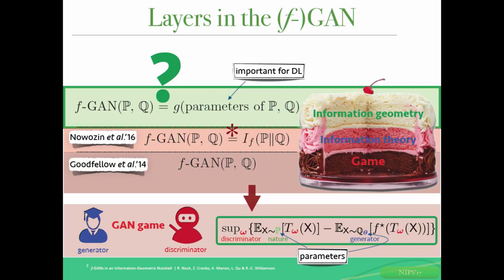Nowozin et al. put an information-theoretic layer on the FGAN game, essentially proving that the FGAN game is equivalent to the F-divergence between P and Q. This gives a very nice overview of the GAN game: if you solve the GAN game and efficiently minimize the loss function from the generator standpoint, you get a form of convergence in distribution between P and Q. But when you look at deep learning papers, people typically use very complex architectures with many parameters for the generator, so the question is: from a parametric standpoint, what kind of distributions can you model? Using a well-known theorem about exponential families, the KL divergence between two exponential families is a Bregman divergence between their parameterizations.